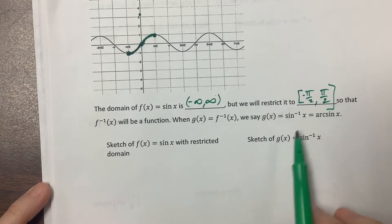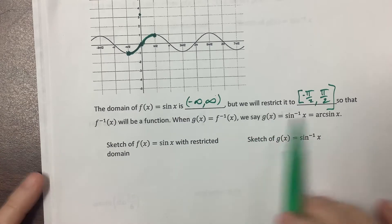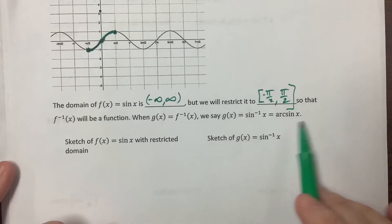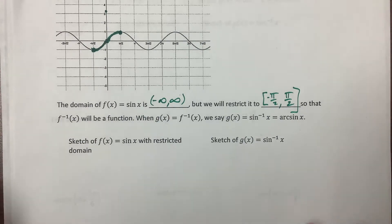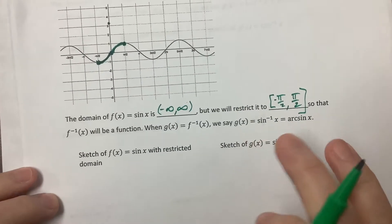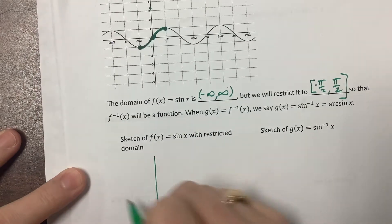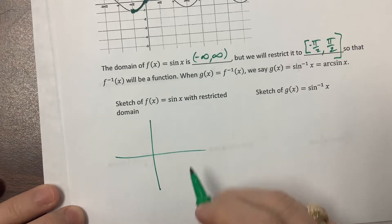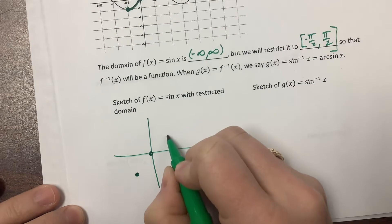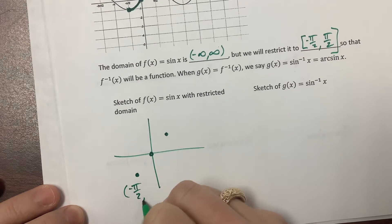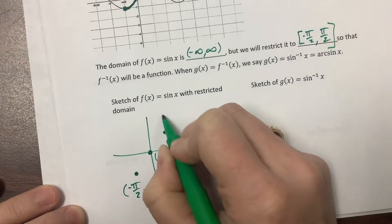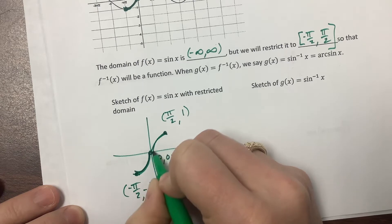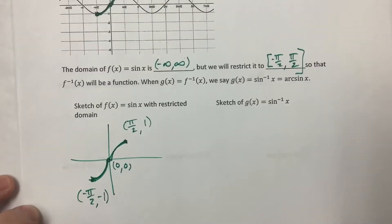When g of x equals the inverse sine, you can write it as the inverse of sine of x or as arc sine — those two terminologies are interchangeable. I know what my graph of sine looks like restricted to this domain: the point negative pi over 2, negative 1; the point 0, 0; and the point pi over 2, 1. This part is concave up and this part is concave down.